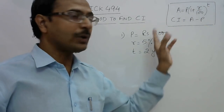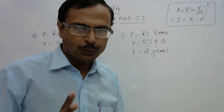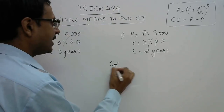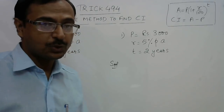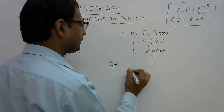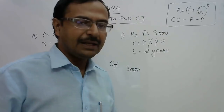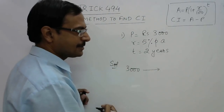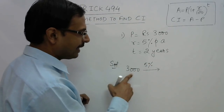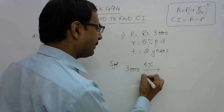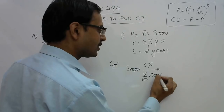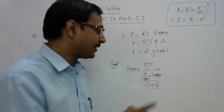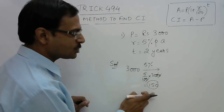In this traditional method, students solve powers of a number, multiply by P to get the amount, then subtract to get compound interest. In competitions, this approach is too slow. Here is a quicker method: take 3000 rupees as the initial amount. For 5% interest in year one, calculate 5/100 × 3000 = 150 rupees. So add that: 3000 + 150 = 3150.